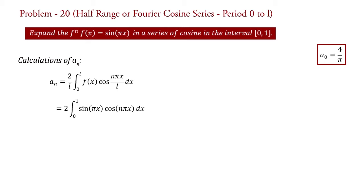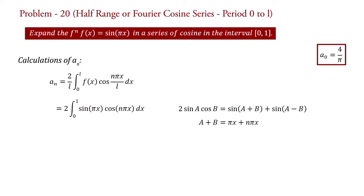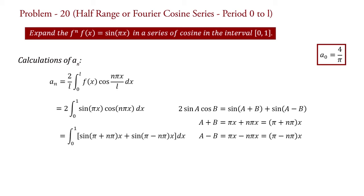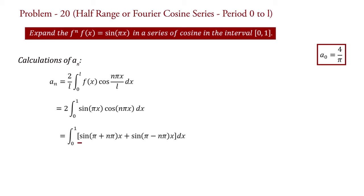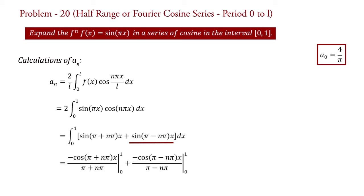We will apply the trigonometric relation: 2 sin(a) cos(b) equal to sin(a+b) plus sin(a−b). Here a equals πx and b equals nπx. Therefore a plus b equals πx plus nπx equals (1+n)πx, and a minus b equals πx minus nπx equals (1−n)πx. So we obtain aN equal to integral 0 to 1 of sin((1+n)πx) plus sin((1−n)πx) dx. Integrating: aN equals minus cos((1+n)πx) upon (1+n)π, limit 0 to 1, plus minus cos((1−n)πx) upon (1−n)π, limit 0 to 1.